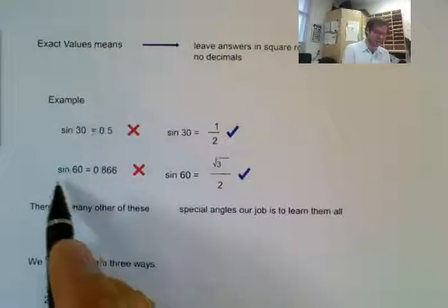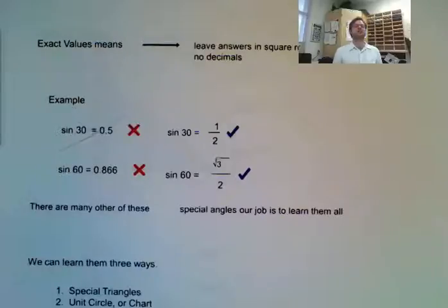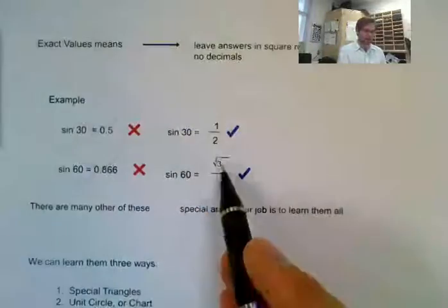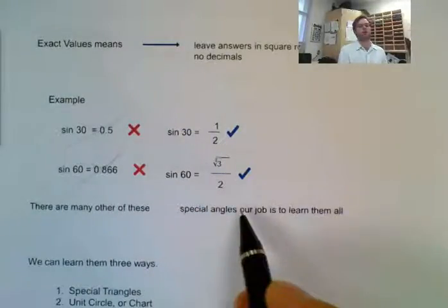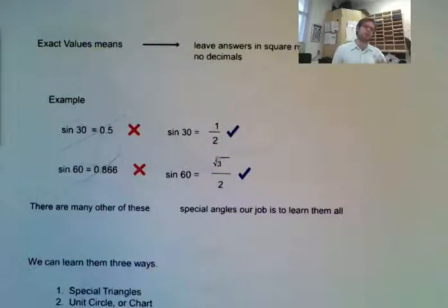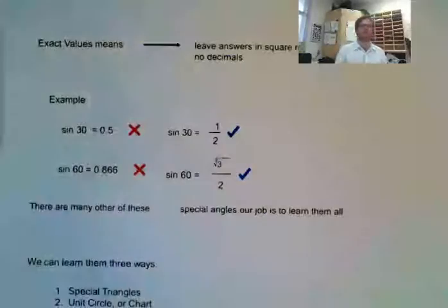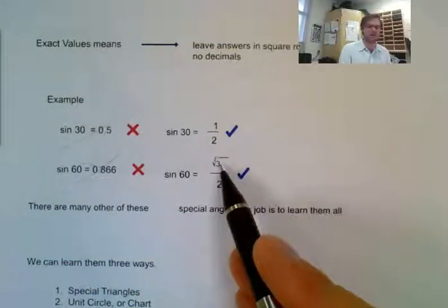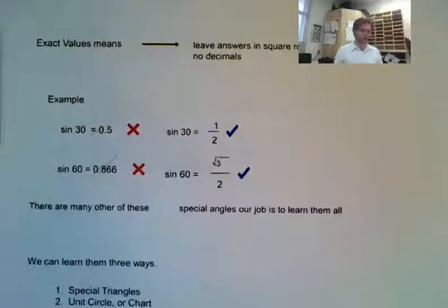If I punched in sine 60 in my calculator, I'm going to get 0.866. That is not an exact value — this is not how we want it written. We want it written as root 3 over 2. That would be an exact value. A key thing to remember: we do not want a radical in our denominator. We want them to always be in the numerator.